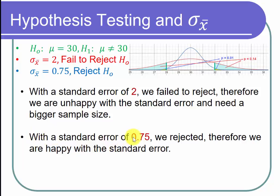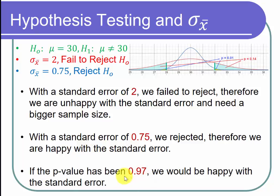With the standard error of 0.75, we rejected the null hypothesis and are happy. We can say with statistically significant evidence that the population mean is not equal to 30 ounces, and action needs to be taken to educate runners. As a final note: had we gotten a p-value of 0.97, most of the area would be shaded and the truth would be revealed — it's likely the mean really is 30 or very close to it — and we wouldn't need to redo the study with a larger sample size.